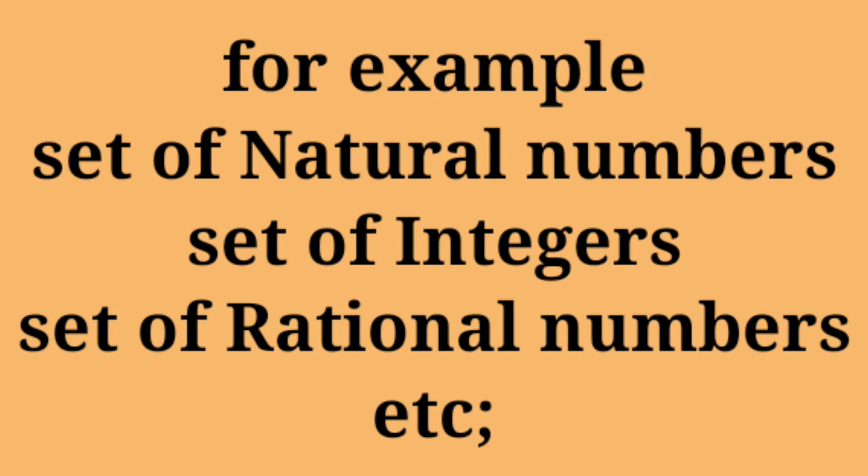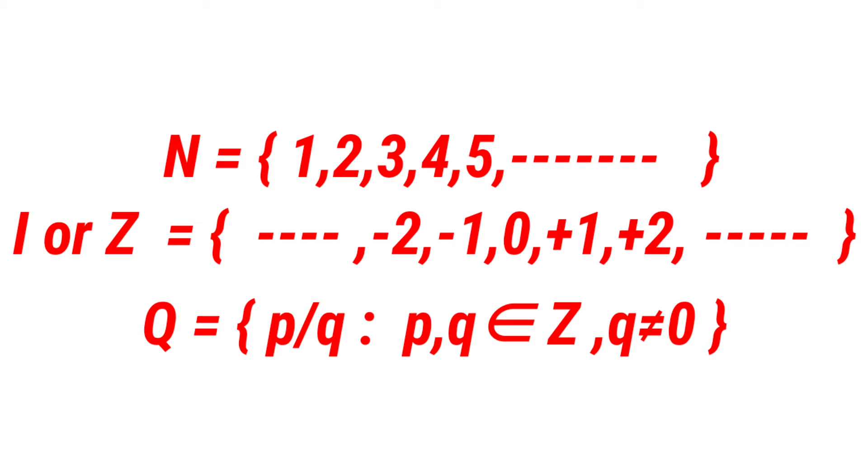A set is denoted by capital letters in the English alphabet. The symbol of a set is a curly bracket. For example, N equals 1, 2, 3, 4, 5, and so on. Integers Z equals minus 2, minus 1, 0, plus 1, plus 2, and so on. And Q equals p by q, such that p, q belongs to Z, and q is not equal to zero.